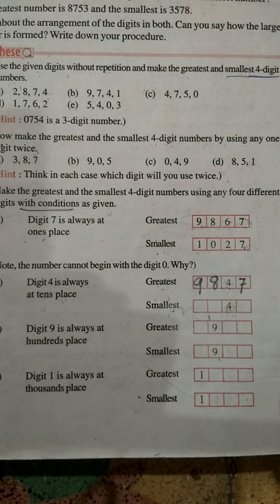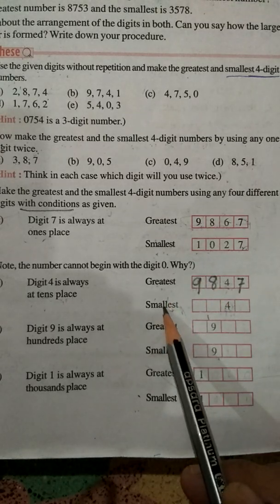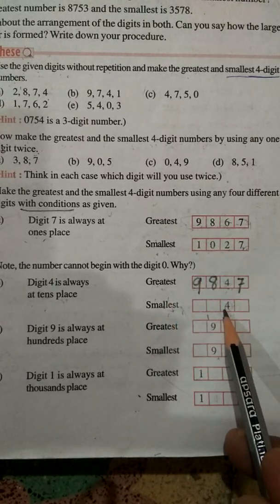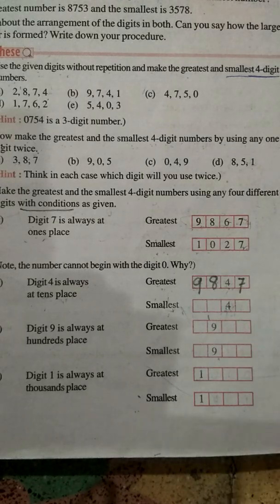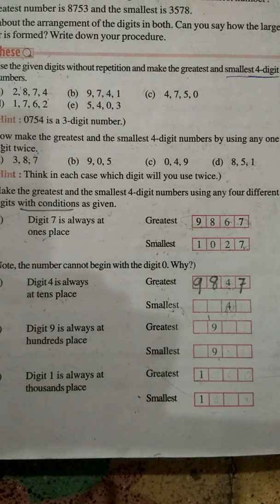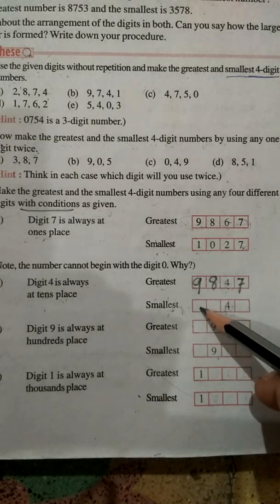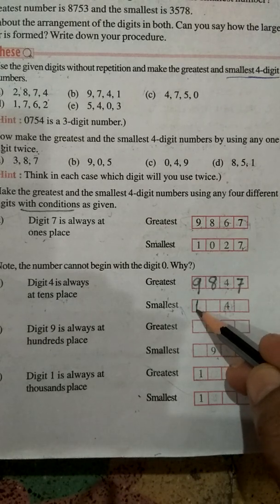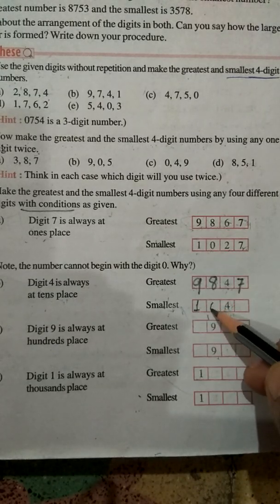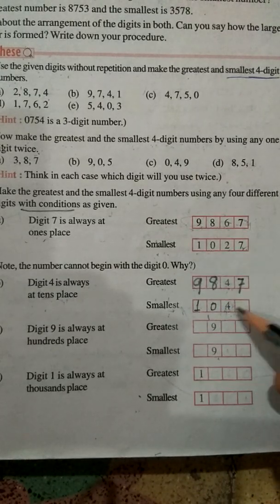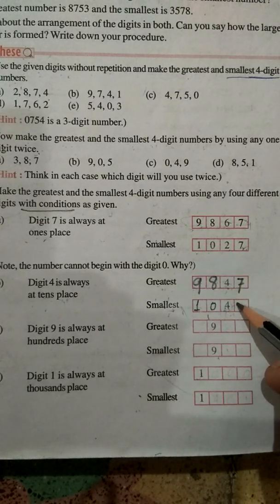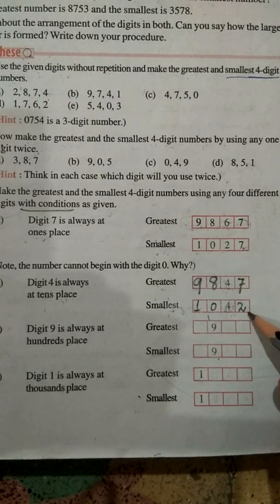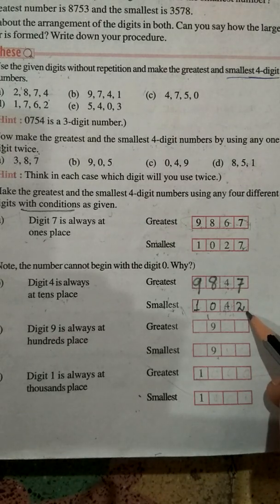Now we have to make the smallest number, keeping 4 at the 10s place. To form the smallest number, looking at the digits from 0 to 9, 0 is the smallest but we can't place 0 at the thousands place. So we take 1, then 0, then 4, then 2. This will become our smallest number: 1, 0, 4, 2.